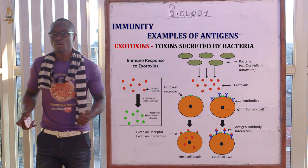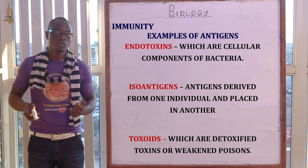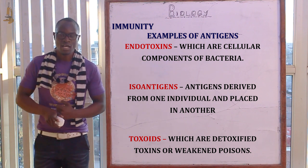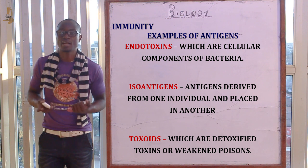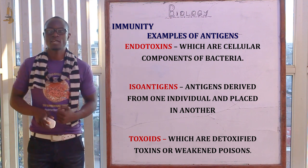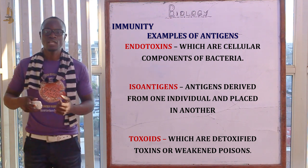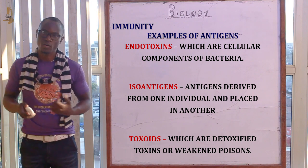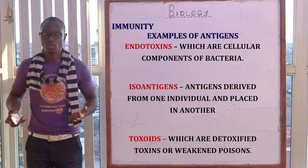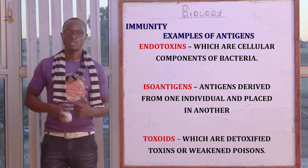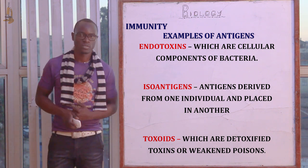We also have endotoxins, which are cellular components of bacteria. Then we have isoantigens, which are antigens derived from one individual and placed into another organism. Finally, we have detoxoids, which are detoxified toxins or weakened poisons.